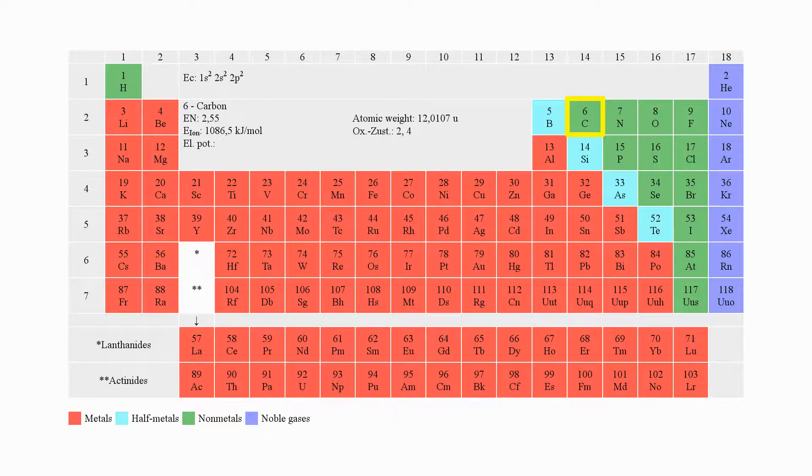Carbon, in the modification called diamond, is also qualified to produce semiconducting devices. Today, only small crystals of synthetic diamonds can be manufactured with disproportional costs, which is why this base material is not used in practice.